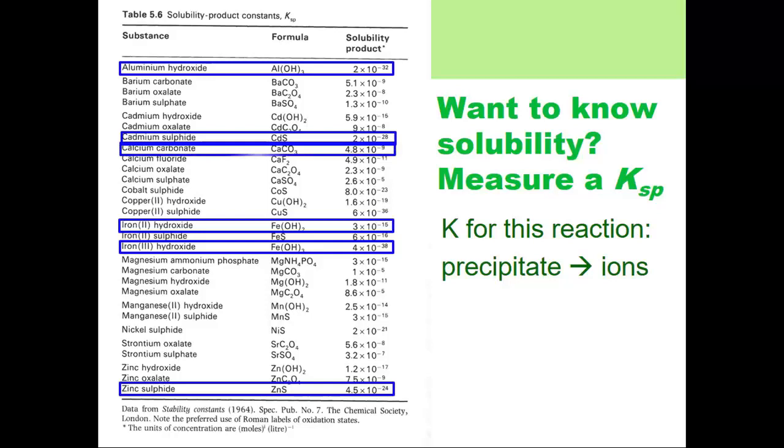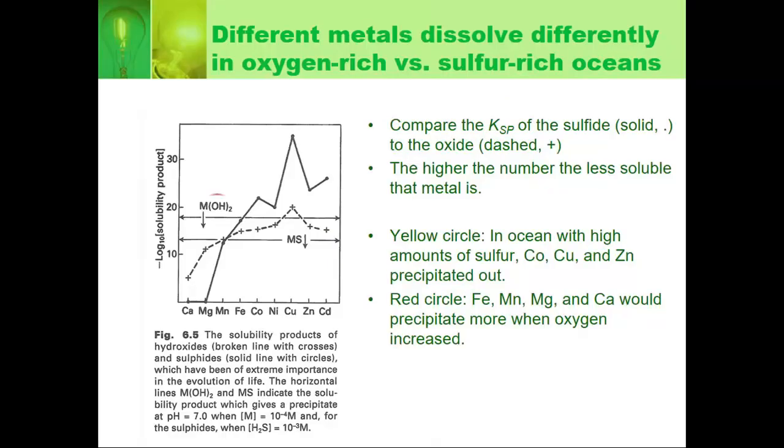And this is what R.J.P. Williams was arguing about. There are some arguments about calcium as well. But you get the idea. So R.J.P. Williams did things where he compared the different things. And he compared the solubility constants for all these different things for the hydroxide versus the sulfide.